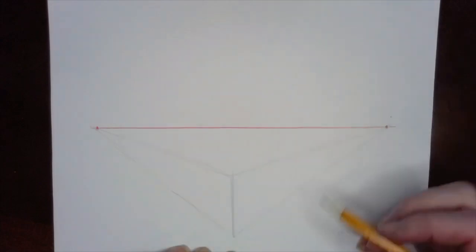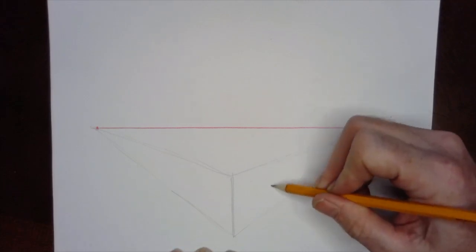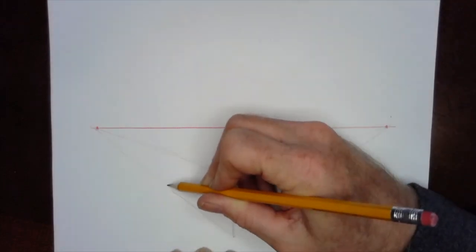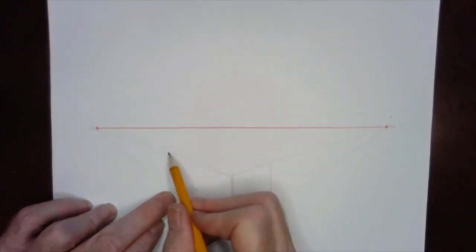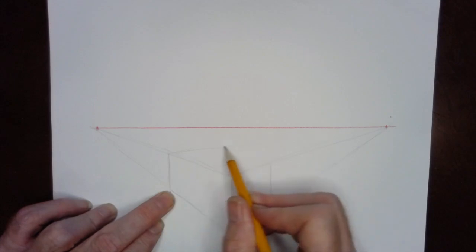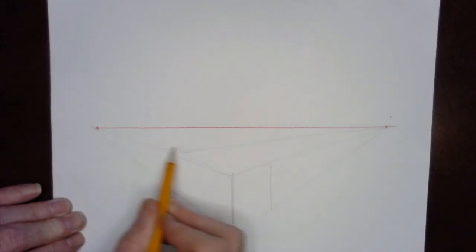Now what I need to do is determine where the back of my box is. So I can go right here, just determine where the back is. I can make this a long horizontal box. And then I take the top corners and go to the vanishing points themselves.